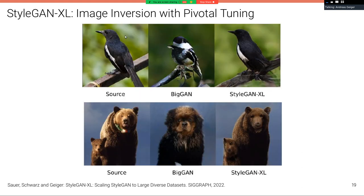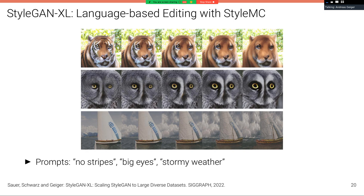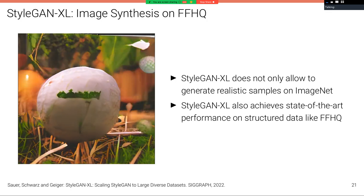So here's an example of image inversion. On the left you can see the source image, and here on the right you can see the inverted image, which looks very similar to the source image. And it looks much closer to the source image than the inverted image from BigGAN, which was one of the earlier models that worked on ImageNet but doesn't produce the same fidelity as StyleGAN-XL. Here at the bottom you can see the same for a beer, where StyleGAN-XL fits the beer better than the BigGAN model. We can also use language-based editing techniques such as StyleMC in combination with StyleGAN-XL. So here we have an input image and we modify that image into a latent dimension that was found through StyleMC for the prompts: no stripes, so remove the stripes, or big eyes, so we make the eyes bigger, or stormy weather here in the last row.